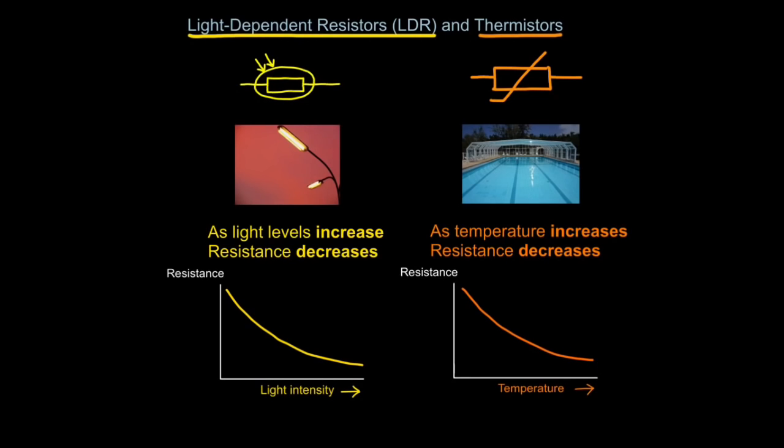Now if you're particularly switched on, you might suddenly realize, hang on, logically this doesn't make sense. If it's dark, then resistance surely should be low, not high, because if it's low, then the current will flow and switch the light on. Don't worry or get too confused by this. Basically, these circuit components work with other circuit components to switch the lights on.